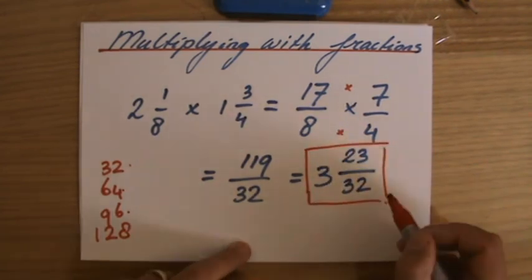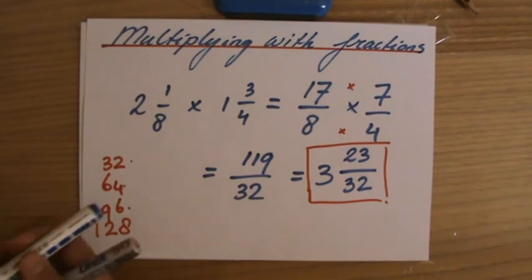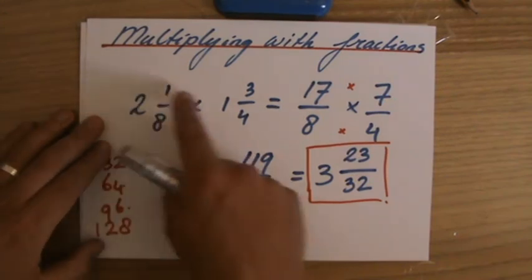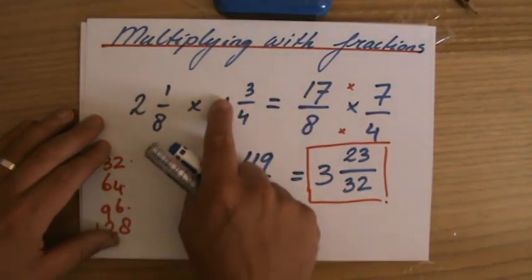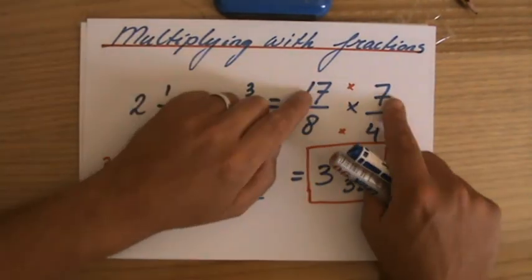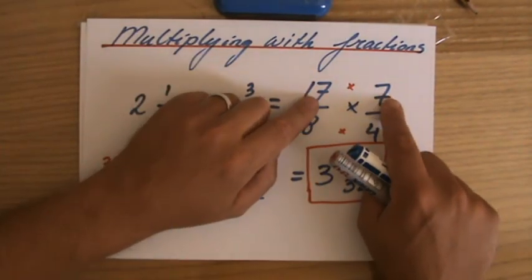A little bit of a weird answer, I agree. So always check your workings properly. That's why we write it down. Change it into a top-heavy fraction: 17 over 8, 7 over 4. You multiply the numerators.